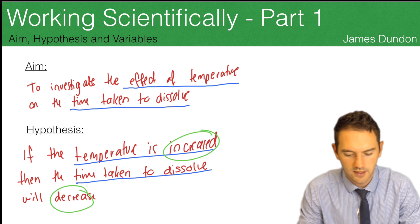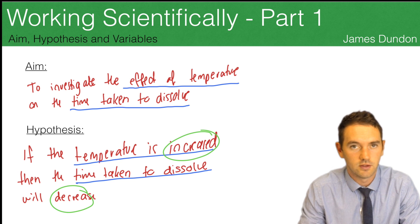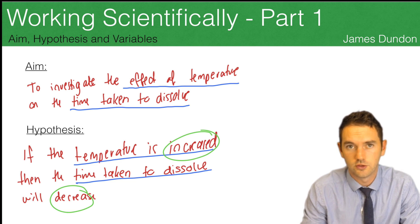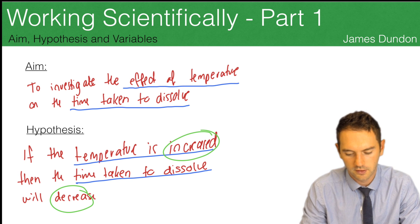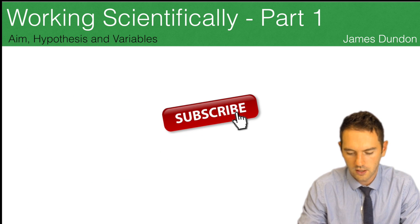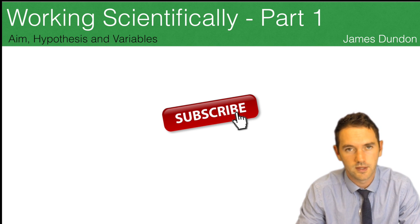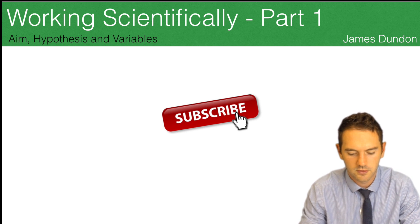So that's how we do aims and hypotheses. We first have to get all the variables together, then choose one to test, choose one to measure, and then we can make our aim and hypothesis. Hopefully that helped, and that's part one: variables, aim and hypothesis. If you liked the video, give it a thumbs up and make sure you subscribe.